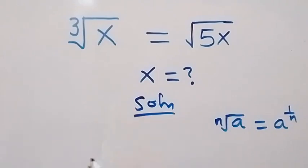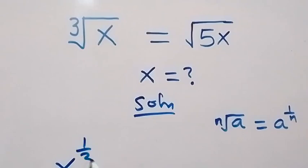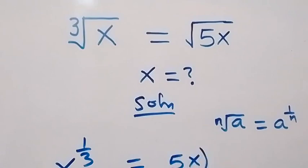Then what we have here becomes x raised to power 1 over 3, and equals to — this side becomes 5x raised to power 1 over 2 (that is, one half).